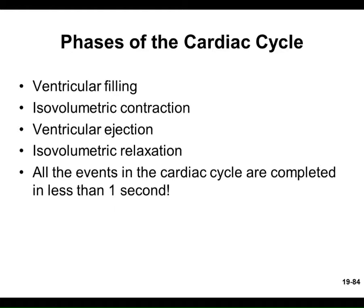The phases of the cardiac cycle: Number one, ventricular filling — the ventricles are filling with blood, so the AV valves must be open. The atria are releasing blood down to the ventricles, partly by gravity, partly by atrial contraction. Number two, isovolumetric contraction — the ventricles are beginning to squeeze but without a change in volume, meaning no volume change yet.